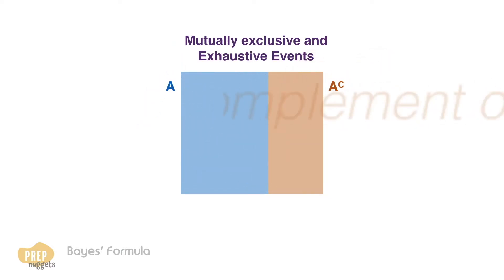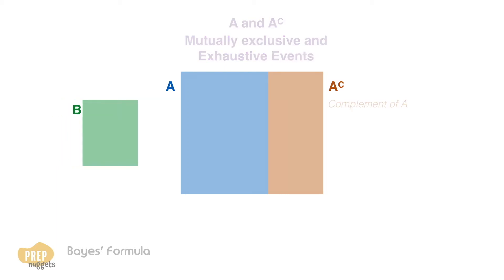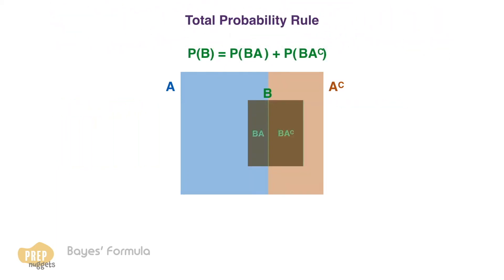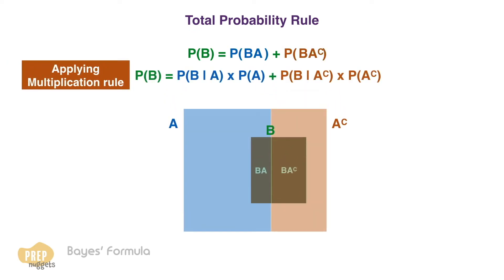Given events A and A complement, which are mutually exclusive and exhaustive, we can find the unconditional probability of an event B using the total probability rule. Applying the multiplication rule, the equation can be restated as such.